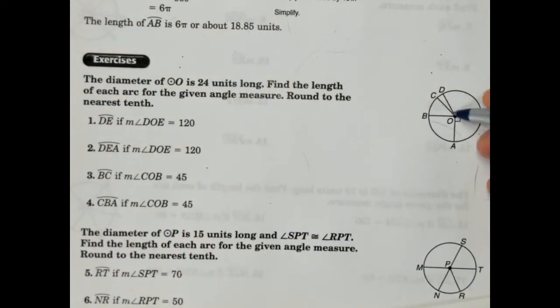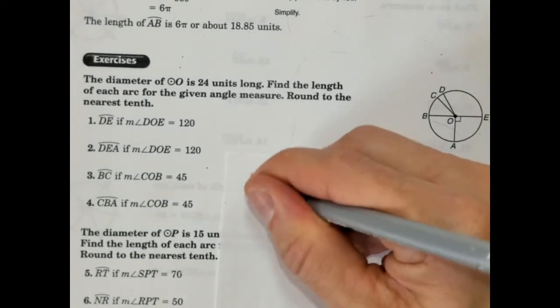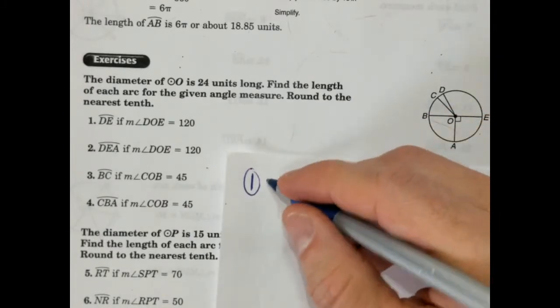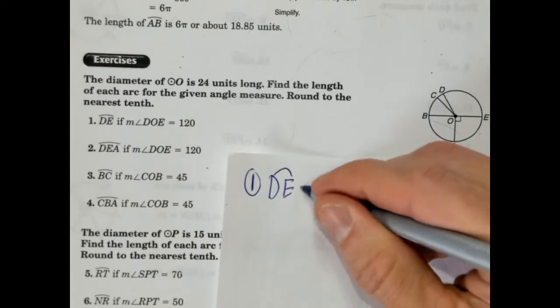So if this is 120 degrees, right, that means the arc, the corresponding arc angle is also 120 degrees. So let's go ahead and write arc angle, arc measure. So the arc is 120 degrees. DE, the arc is 120 degrees.